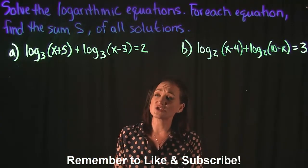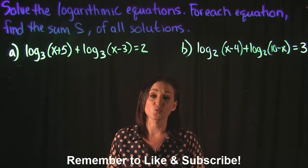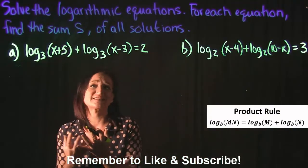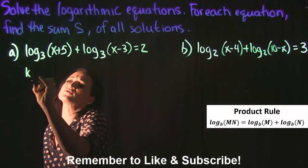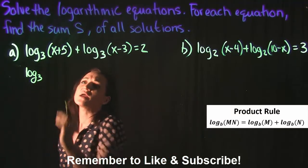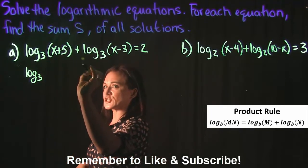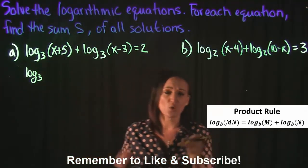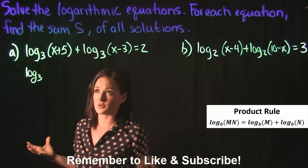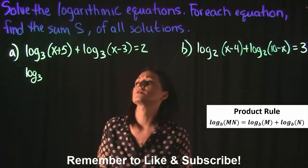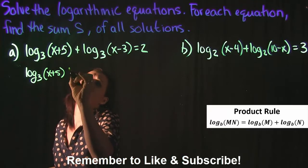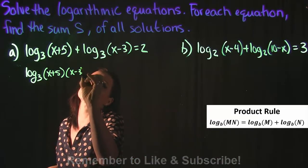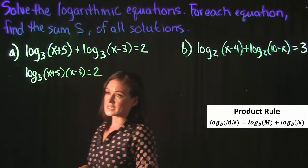I'm going to start by using the product rule for logs to condense this together. I want to join these two logs together. Since they're the same base I can do that, and because there's an addition between the two that correlates to a multiplication. This is the product rule for logs. I can just take the x plus 5 and multiply it by the x minus 3, and that's going to equal 2.